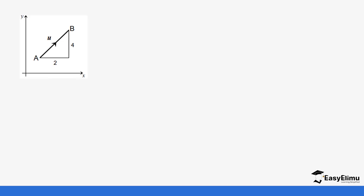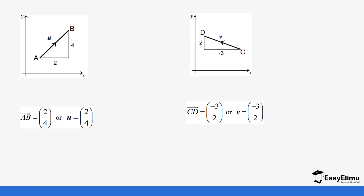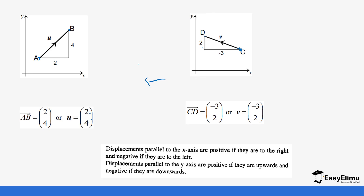Let's look at a few more examples regarding the components of a vector in 2D. Looking at two different vectors, notice the movement along the x-axis and the y-axis. For example, moving from point A to point B, you go two steps on the x-axis and four steps on the y-axis, as indicated in the column vector. For vector CD, moving from C to D goes in the opposite direction — towards the negative side of the x-axis — while on the y-axis you are moving two units, which remains positive.